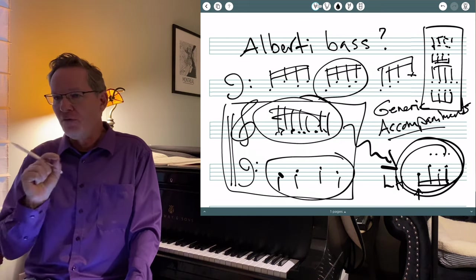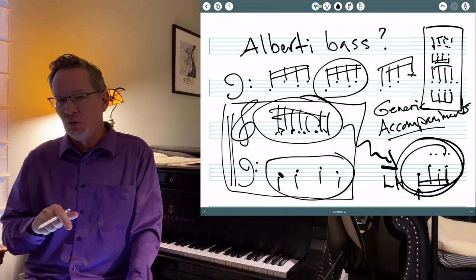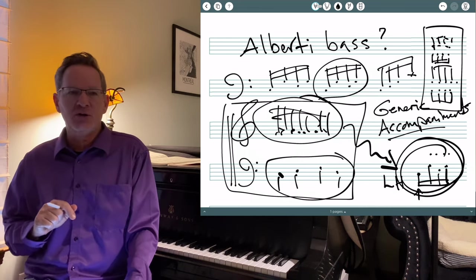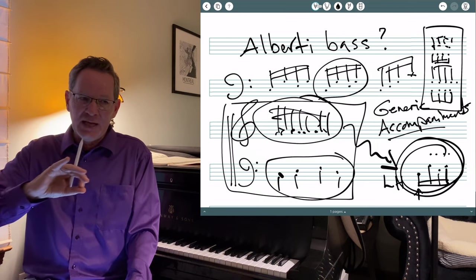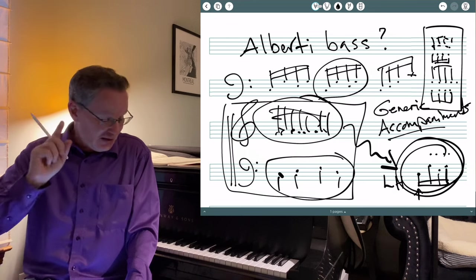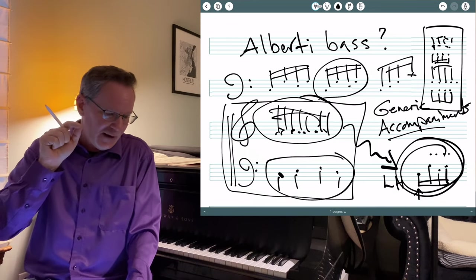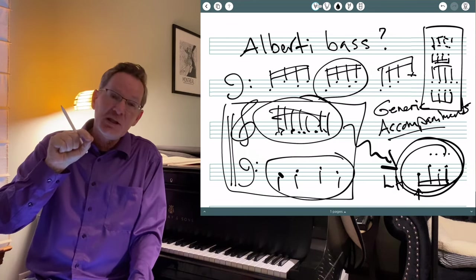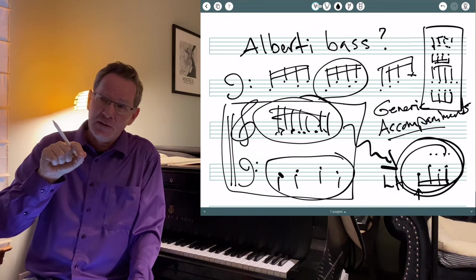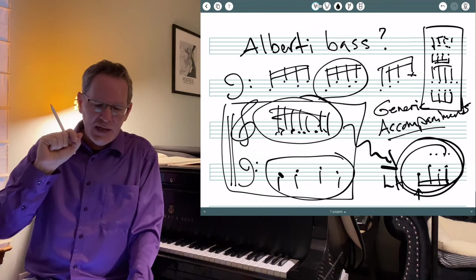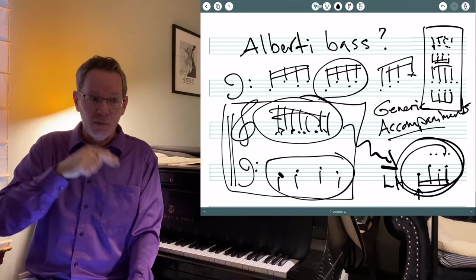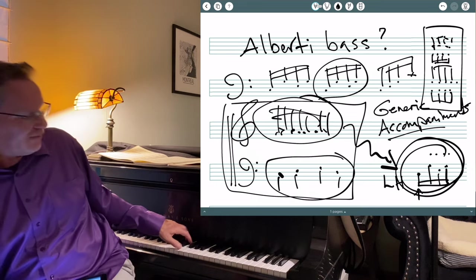So it's closer to a sustained kind of accompaniment. And interestingly, if you look at the slow movements of Mozart in the piano literature, often the accompaniment is something repeated, like an Alberti or this kind of thing.